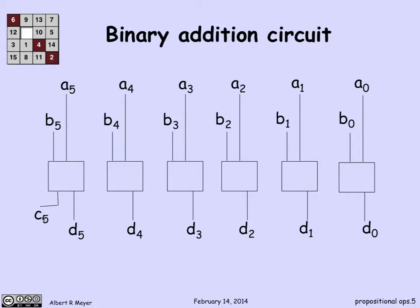And then c5 is if the sum of two six-digit numbers runs to seven digits, which it might, as we saw in the previous example, then c5 would become 1, otherwise 0. So this is the specification. I want a and b to come in, and I want their binary sum to come out as d's with a high order c if need be.